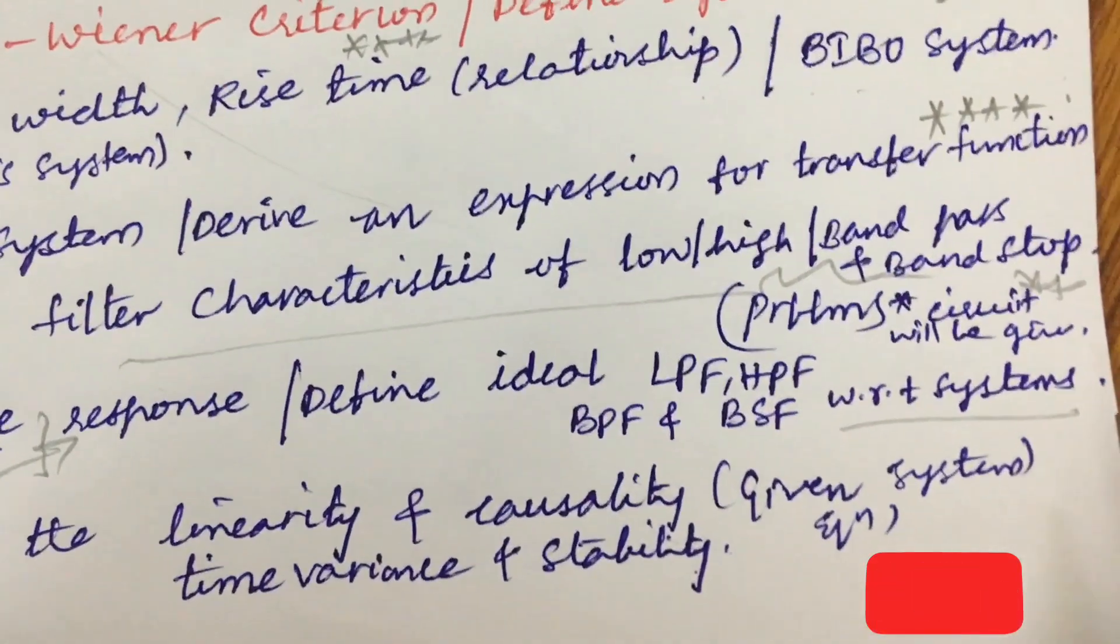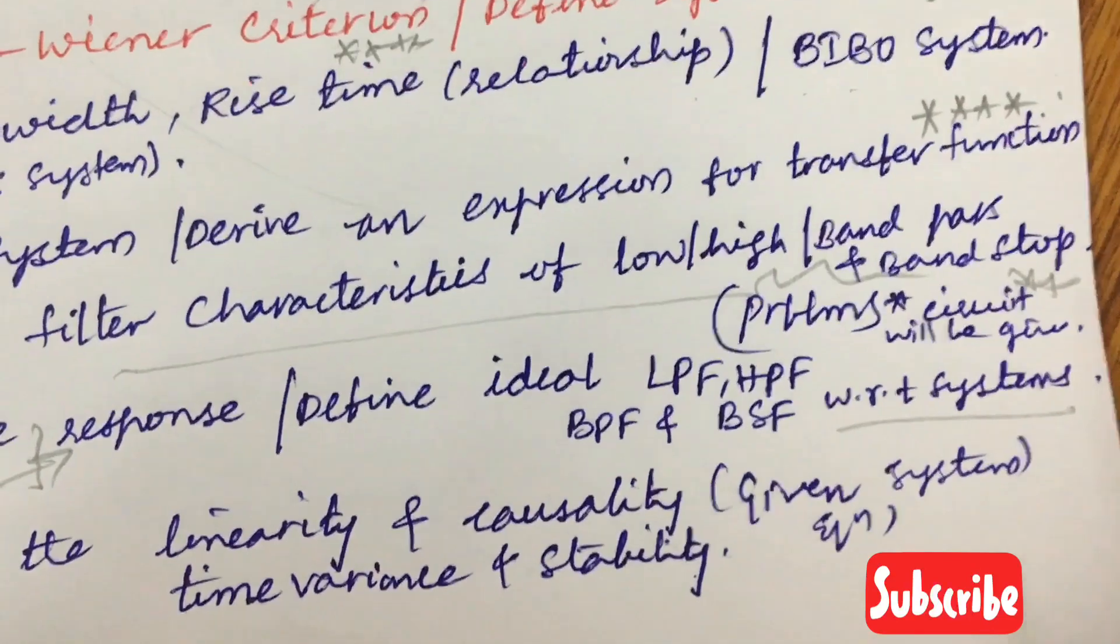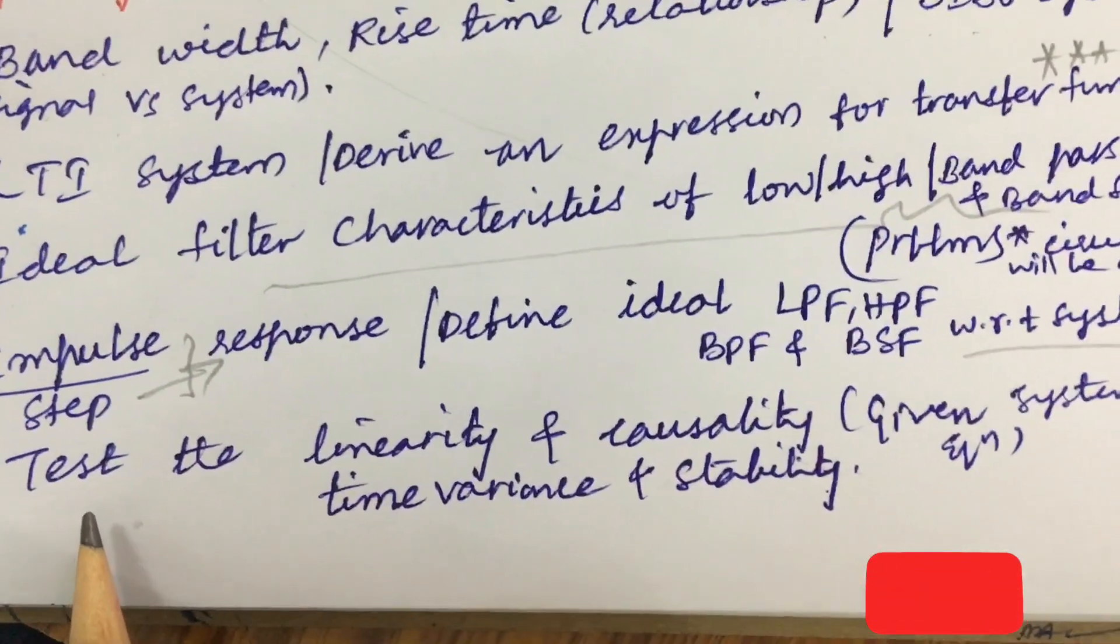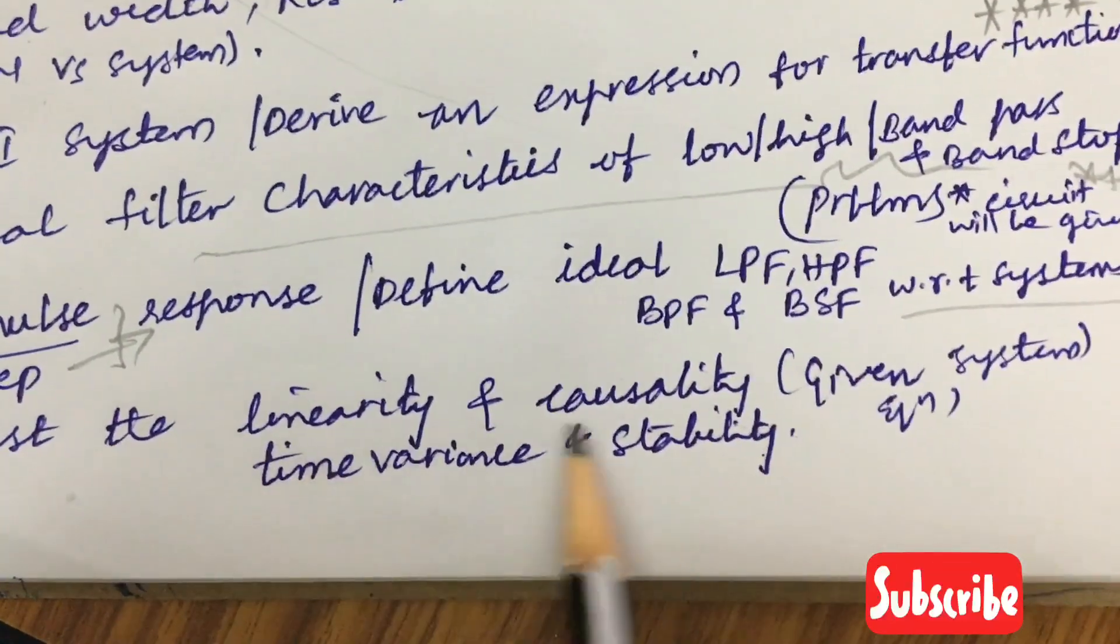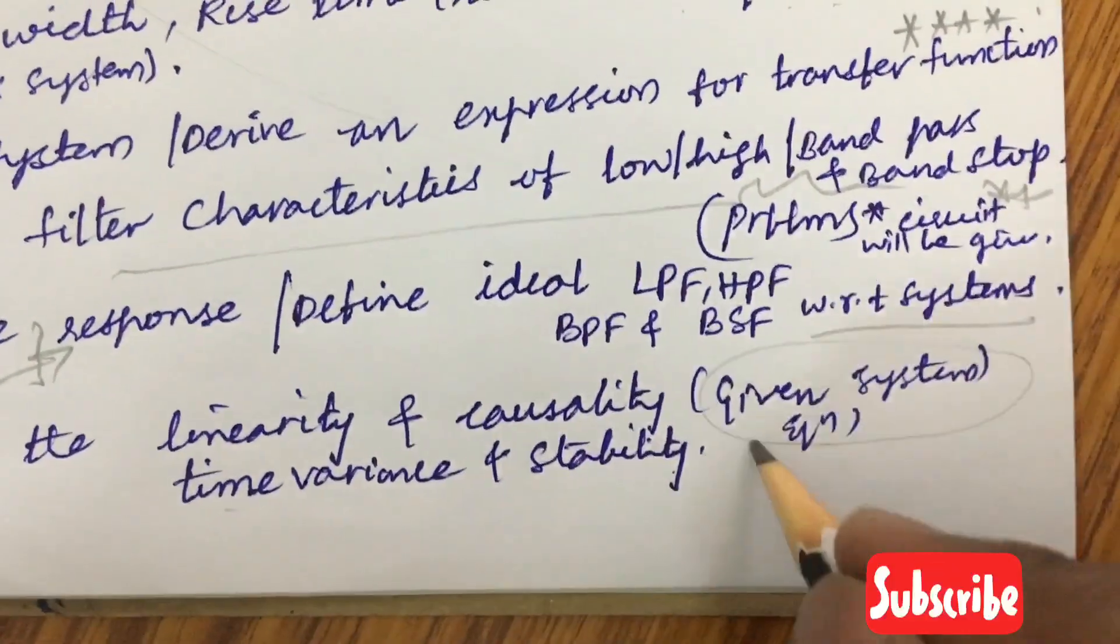Dear students as I was telling that the signals and systems course is too lengthy in structure these all are the questions which you are supposed to work out for the course. Signals and systems test the linearity and causality time variance and stability for the given relations and equations may be also one of the 7 or 10 mark problem.